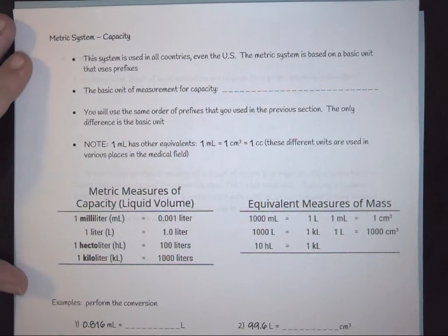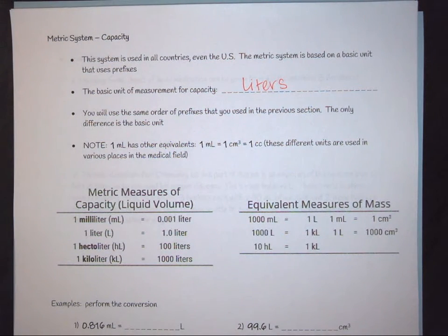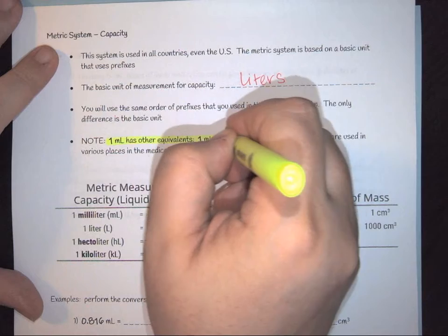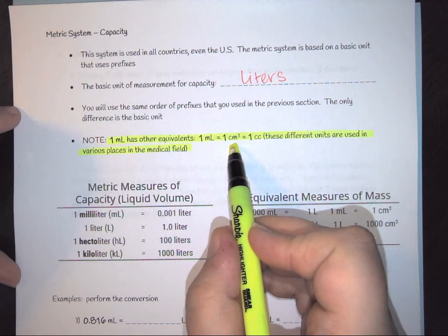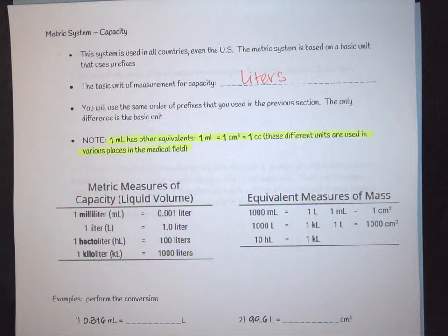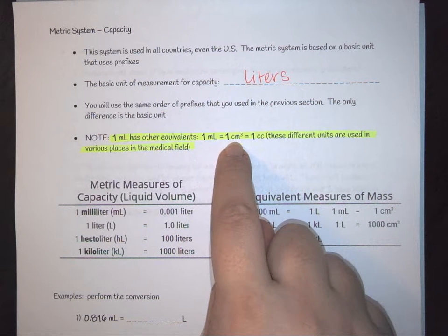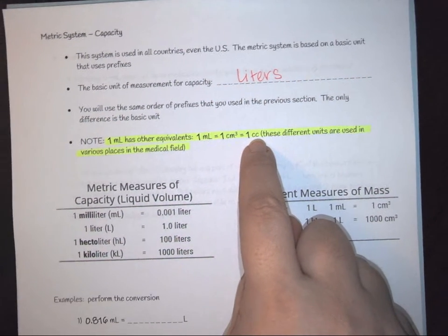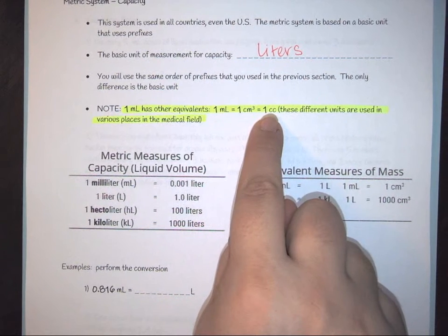For capacity, we work with liters as the metric unit of liquid measure. An important equivalency to remember is that one milliliter equals one centimeter cubed, which also equals one CC. Milliliters are common in science, centimeters cubed in architecture or engineering, and CC is used in the medical field.